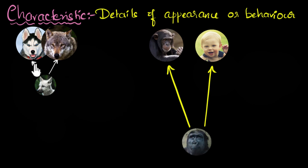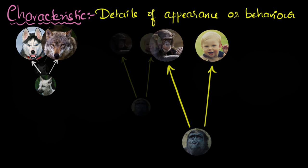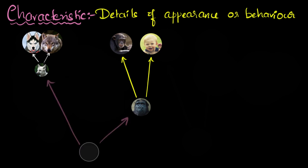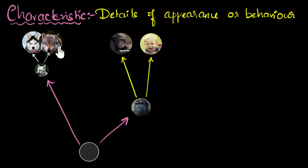What about the common ancestors of dogs and humans? Our relation is very far away, so we expect our common ancestor to be even further back in time — perhaps a few billion years ago. These ancestors might look very different from any dog, human, or chimp. They might as well be the first mammals ever, found much further back in time.